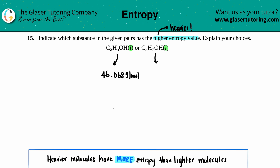Now for C₃H₇OH: three carbons — 3 × 12.01 — plus a total of eight hydrogens, plus one oxygen at 16. This one comes out to 60.094 grams per mole.